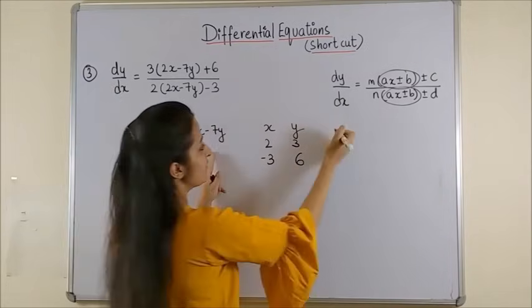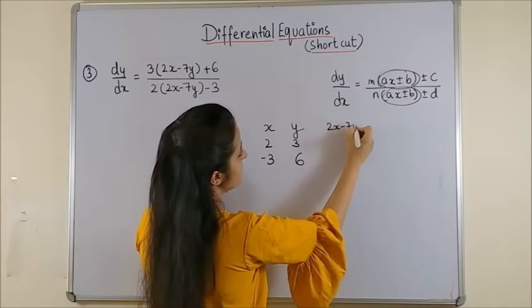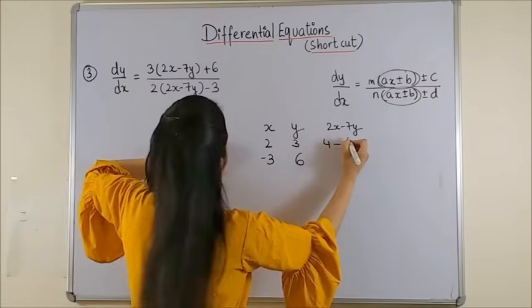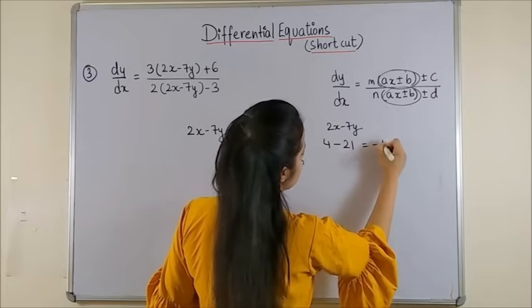Now, to find the values, the first one is anyway giving you 2x minus 7y. Next, this will be 2 into 2. That's 4. Minus 7 into 3. That's 21. So, it's minus 17.